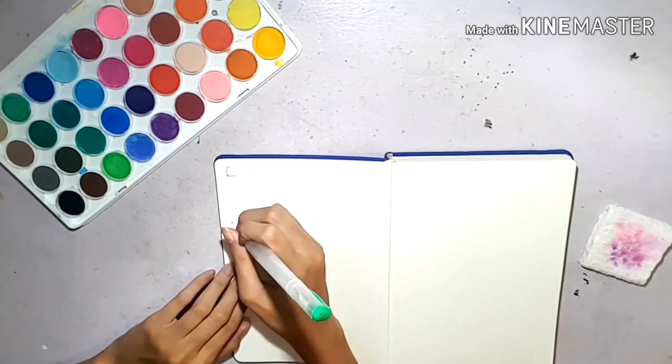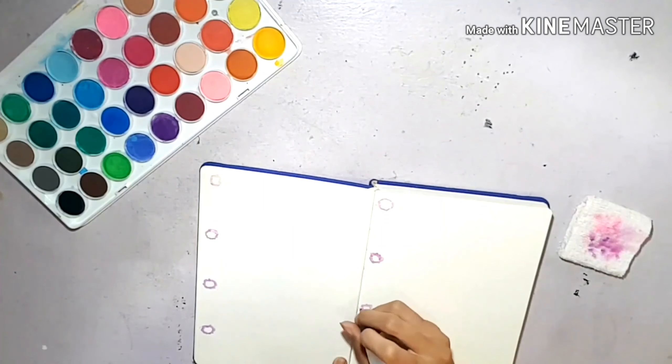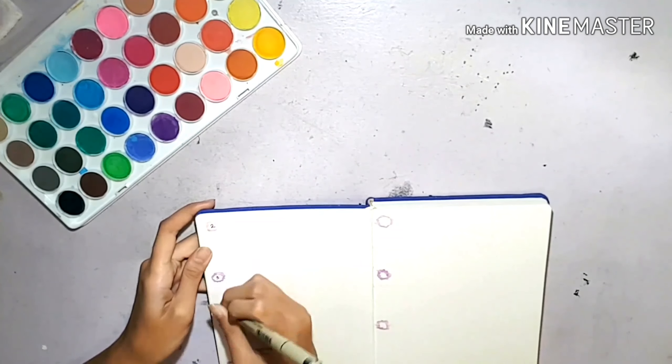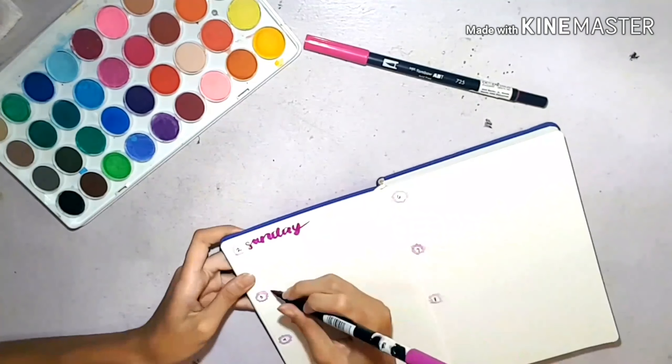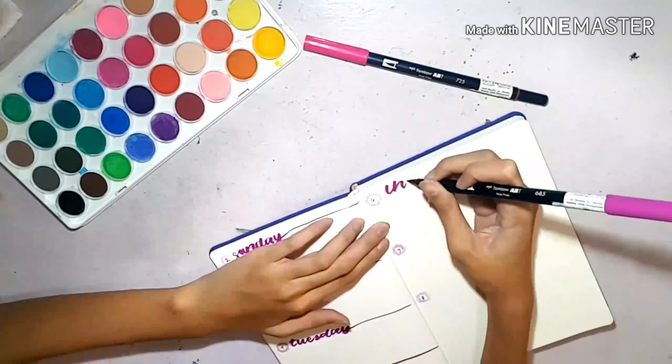Finally we are on to our first weekly spread. I'm using my watercolor to paint on dots in a circle, then I put on the numbers in each one and use my brush pen to write the day of the week.